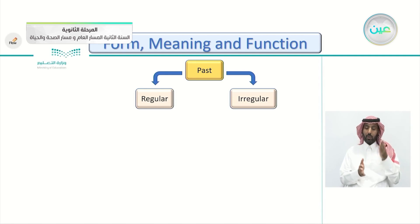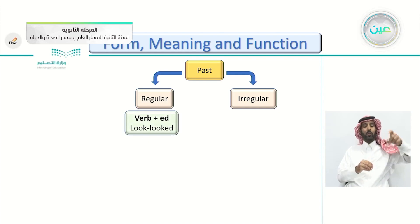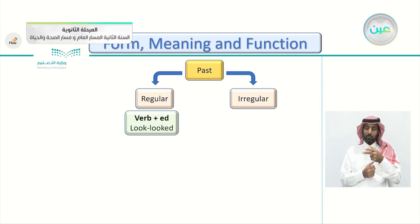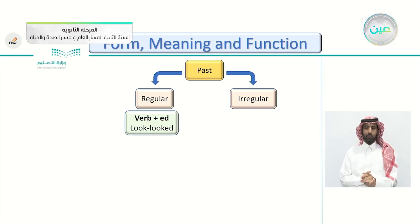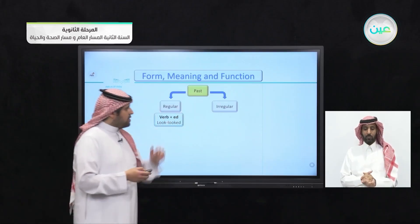Past tense verbs have two kinds: regular and irregular. Regular verbs — from the word itself — have nothing unusual: you just add '-ed.' For example, 'look' becomes 'looked.' There are some special cases: if the verb ends in 'y,' remove the 'y' and add '-i-e-d.' Also, if a verb ends in 'e,' just add 'd' — for example, 'like' becomes 'liked,' and 'want' becomes 'wanted.'